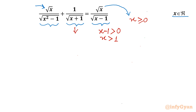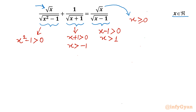For the radical term square root of (x plus 1) in the denominator, x plus 1 must be greater than 0 — it must be positive, otherwise a complex solution will be generated — so x must be greater than minus 1. For square root of (x squared minus 1) in the denominator, x squared minus 1 must be positive; equality cannot hold, so x cannot equal 1. Factorizing using difference of two squares: (x plus 1)(x minus 1) must be positive.